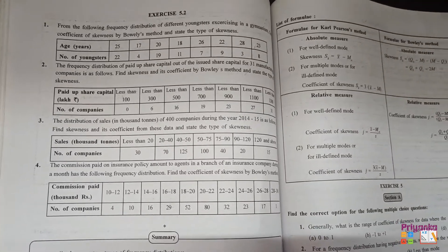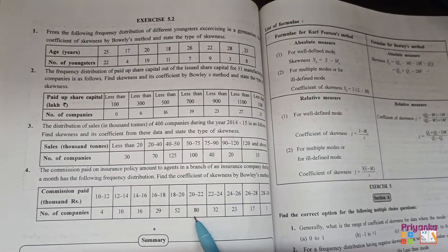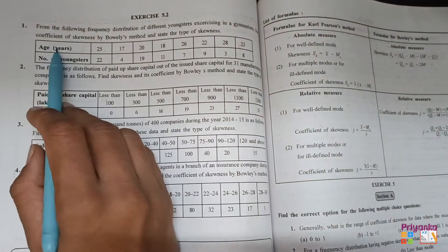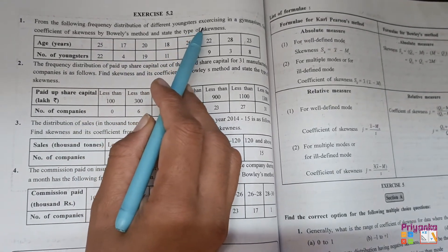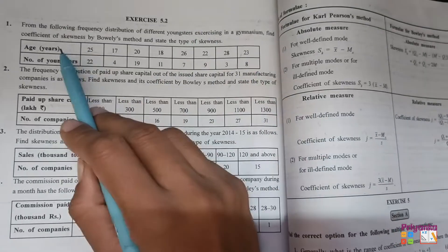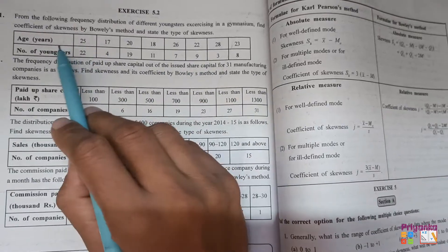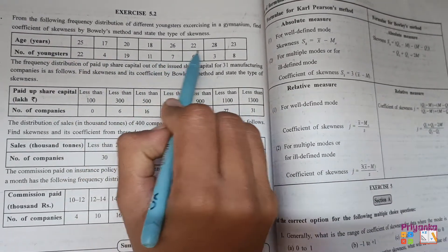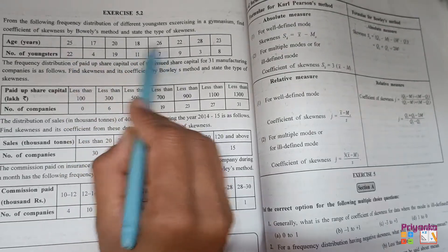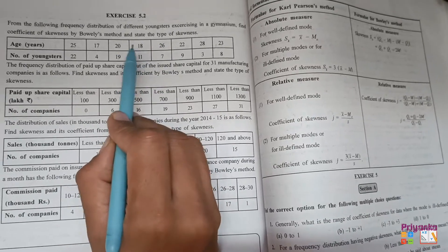Exercise 5.2, which is on page 206. In this whole exercise, we are going to learn about Bowles matter. First question: from the following frequency distribution of different youngsters exercising in a gymnasium, find a coefficient of skewness by Bowles matter and state the types of skewness. Here you can see the observation - first check with the observation, it is unequal.